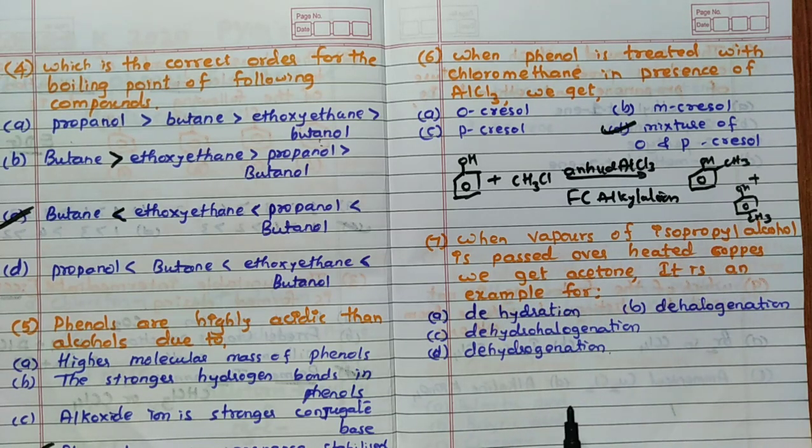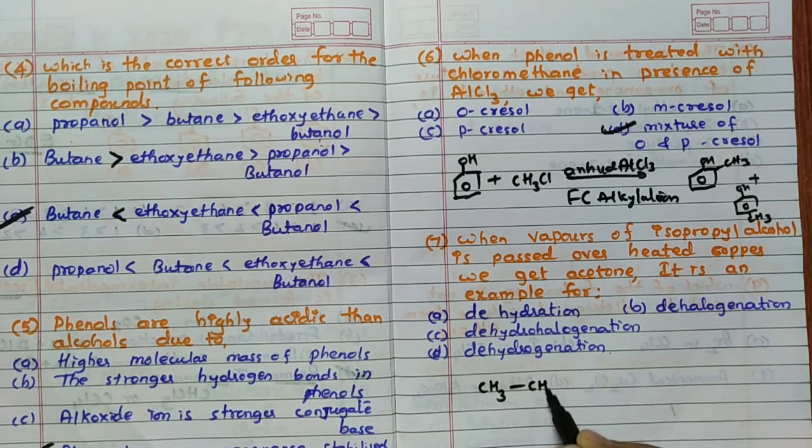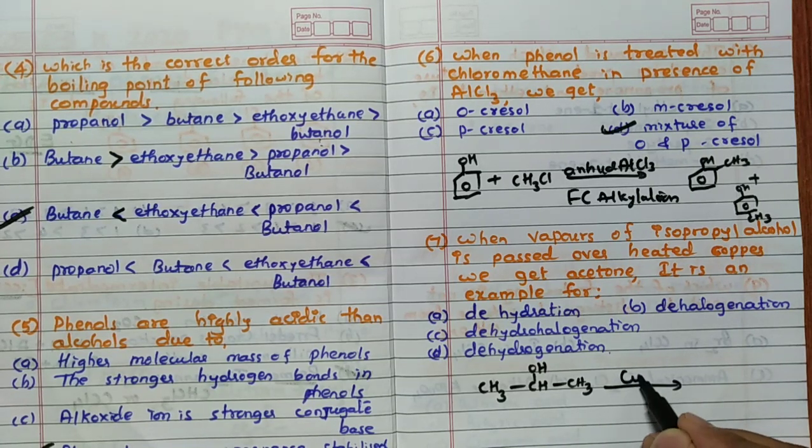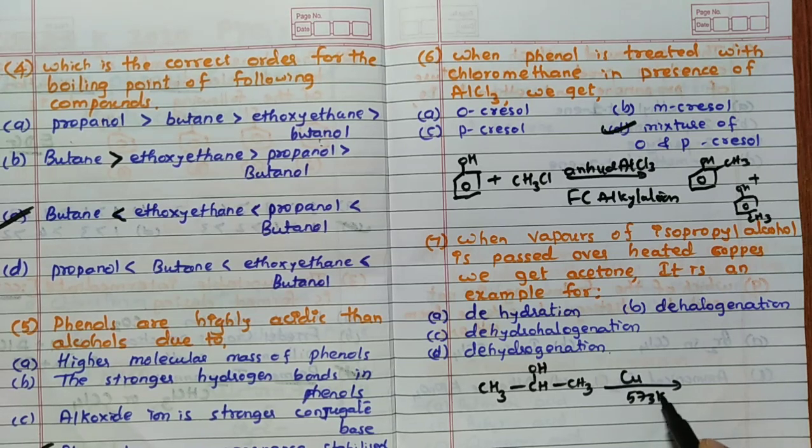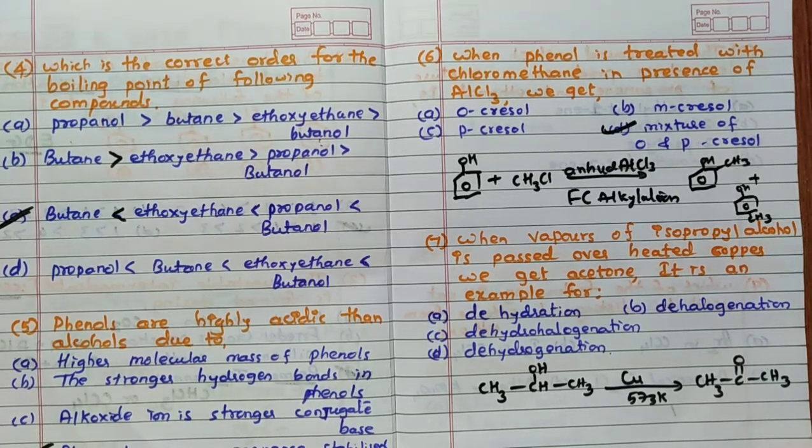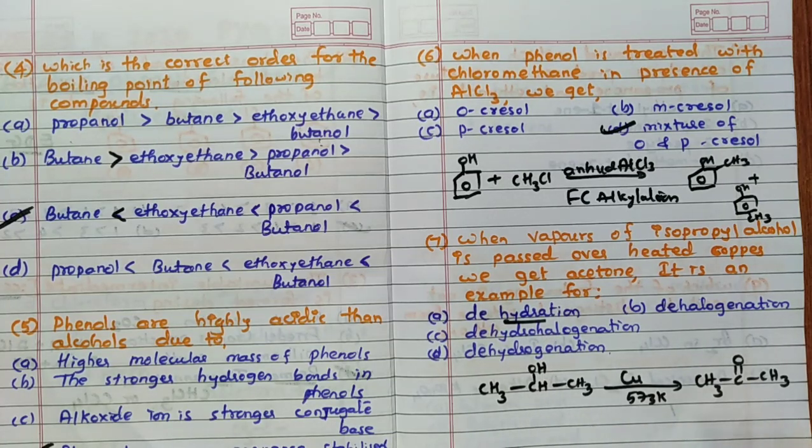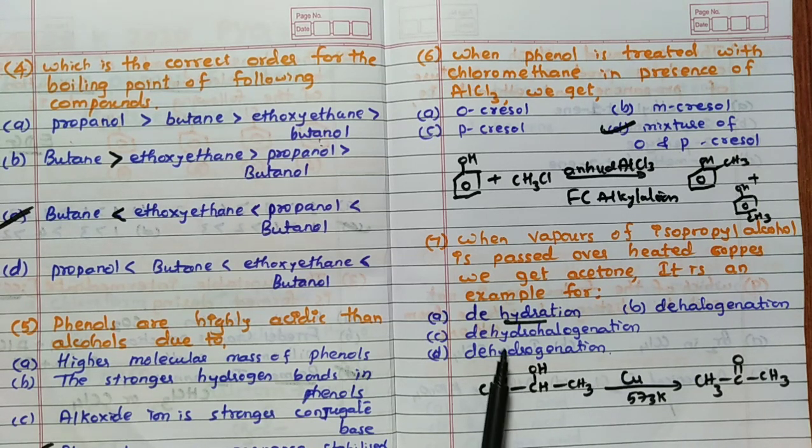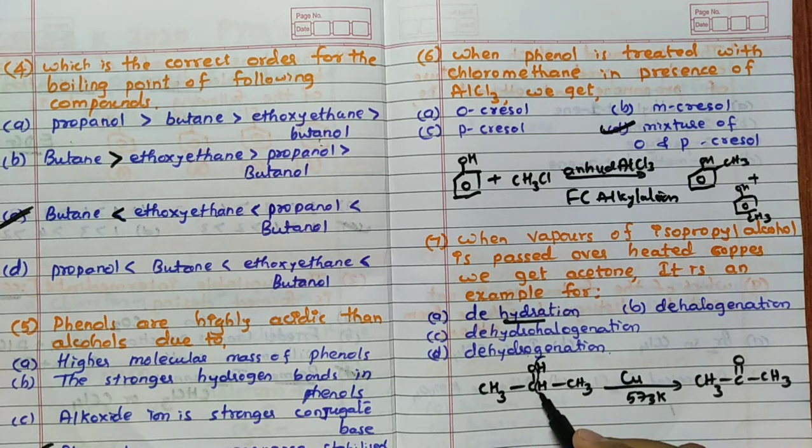Then when vapors of isopropyl alcohol - isopropyl alcohol is like this, CH3-CHOH-CH3. So this when it is passed over heated copper, 573 Kelvin you will heat, you get acetone. Acetone formula CS3-C=O-CH3. It is an example for which type of reaction they are asking. Now you can see which type of reaction it is. For that you have to say dehydration means water should be removed. Here you can see removal of water is not there. Dehalogenation means halogen is removed. There is no halogen itself. Dehydrohalogenation means hydrogen and halogen is removed. So hydrogen is not there.